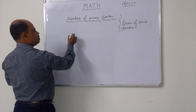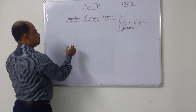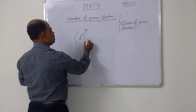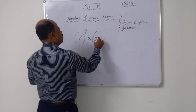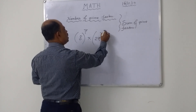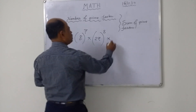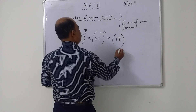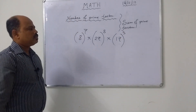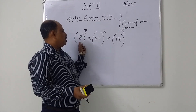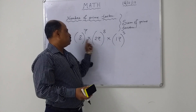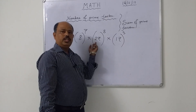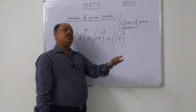Next question: what is the number of prime factors of 8 to the power 7, into 27 to the power 8, into 17 to the power 3? You know that all base numbers should be prime. But 8 is not a prime number, 27 is also not a prime number, but 17 is a prime number.